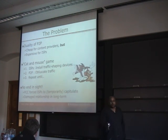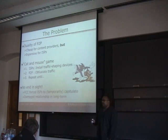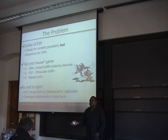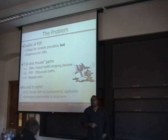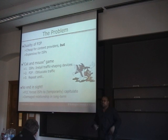Initially, ISPs installed network devices that scanned incoming packets. Since P2P networks used fixed ports, it was easy to identify and throttle P2P traffic, leading to increased download times for users. Developers retaliated by switching to random arbitrary port numbers. ISPs then deployed more advanced deep packet inspection. Developers retaliated again by encrypting their messages. So we see this cat-and-mouse game happening between ISPs and developers.